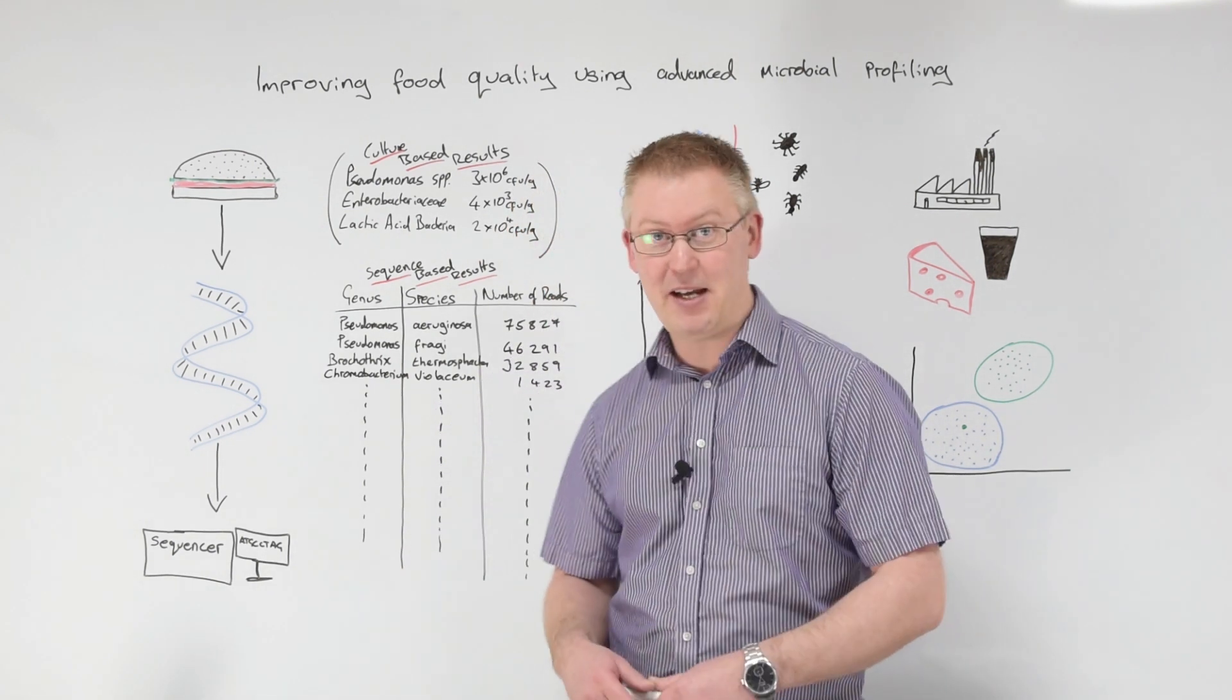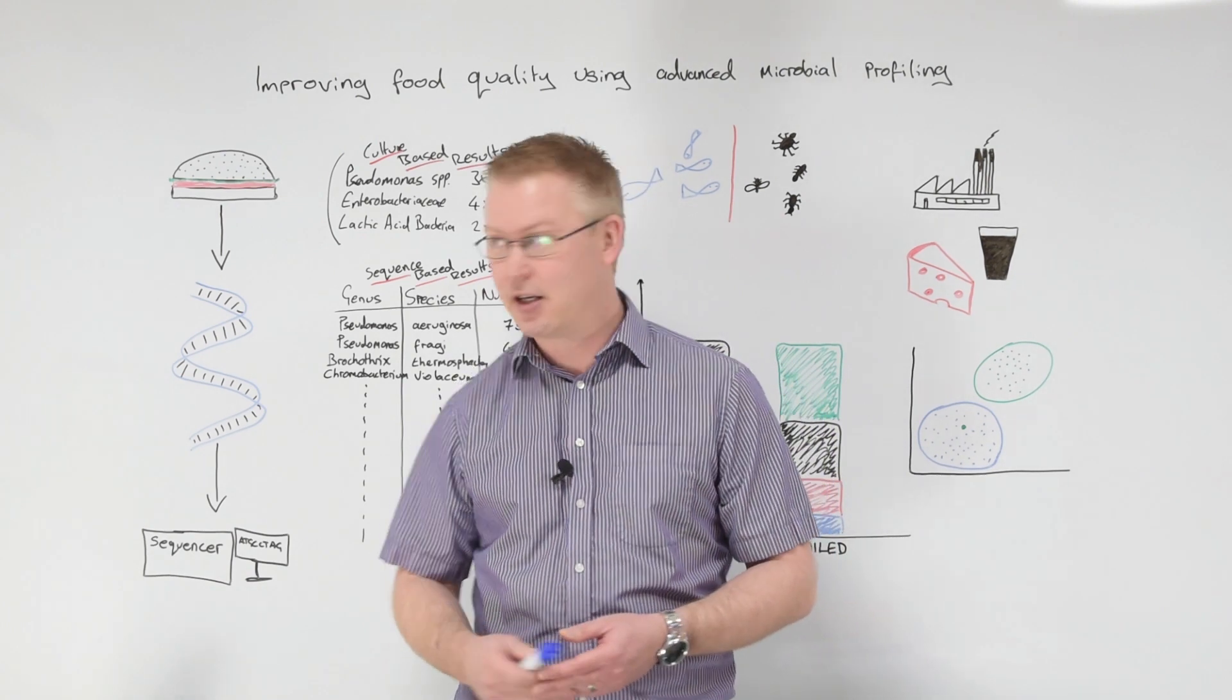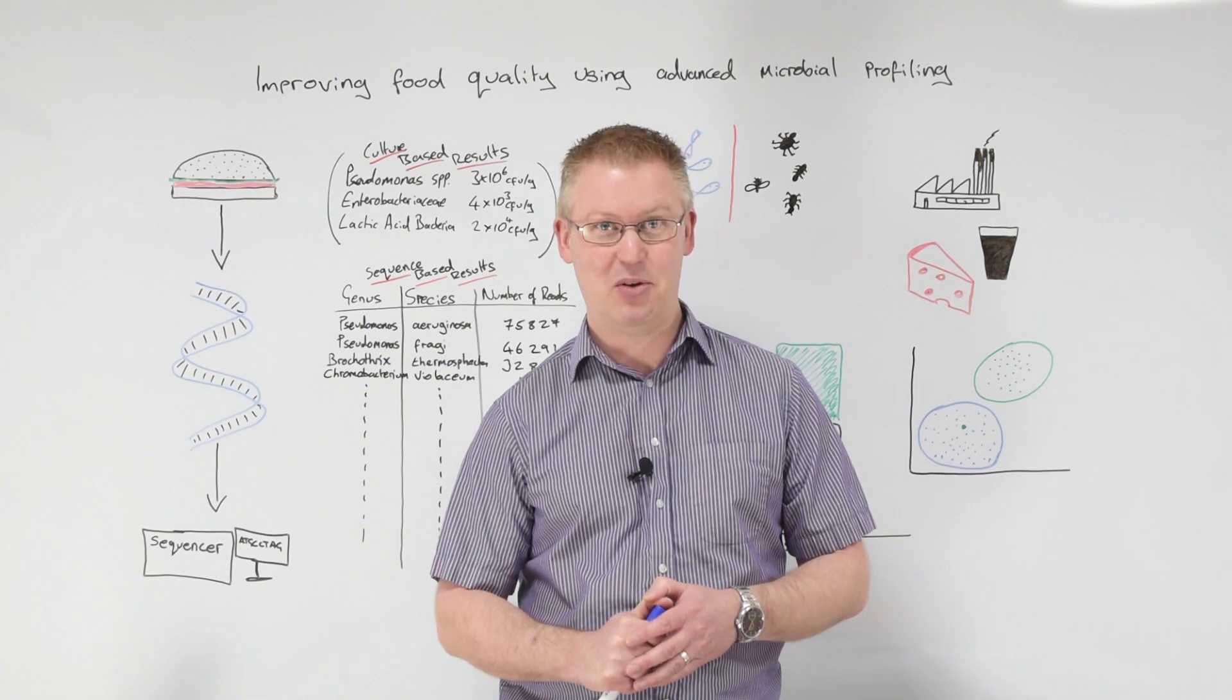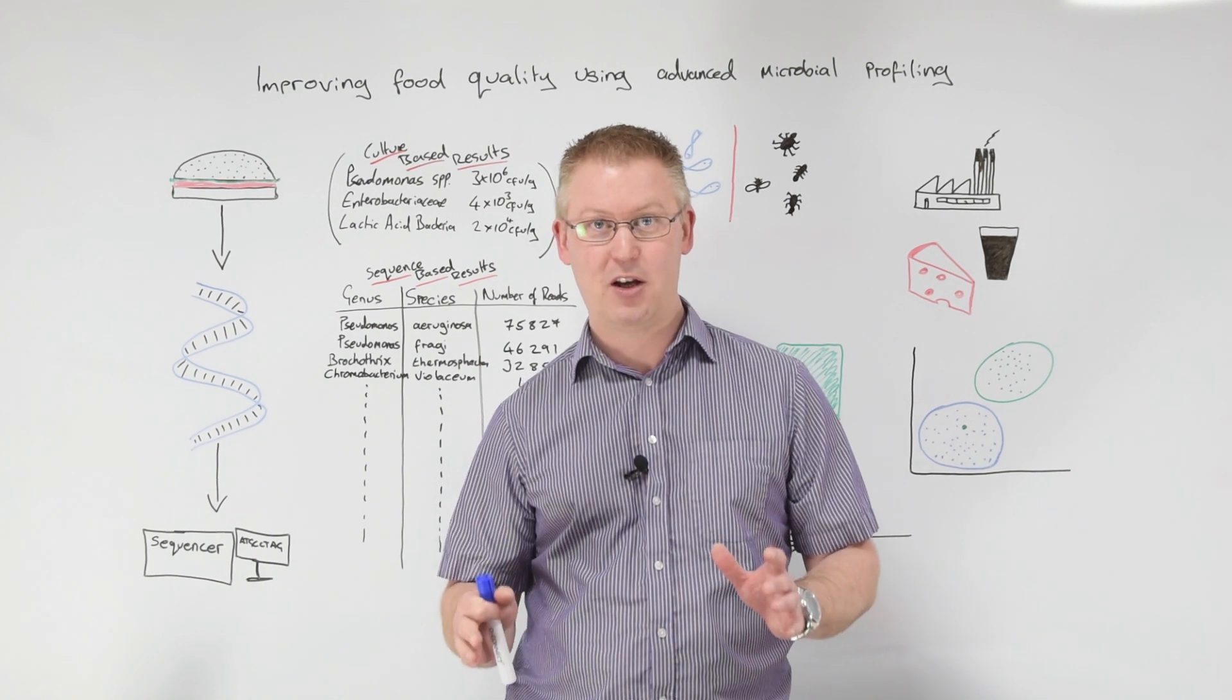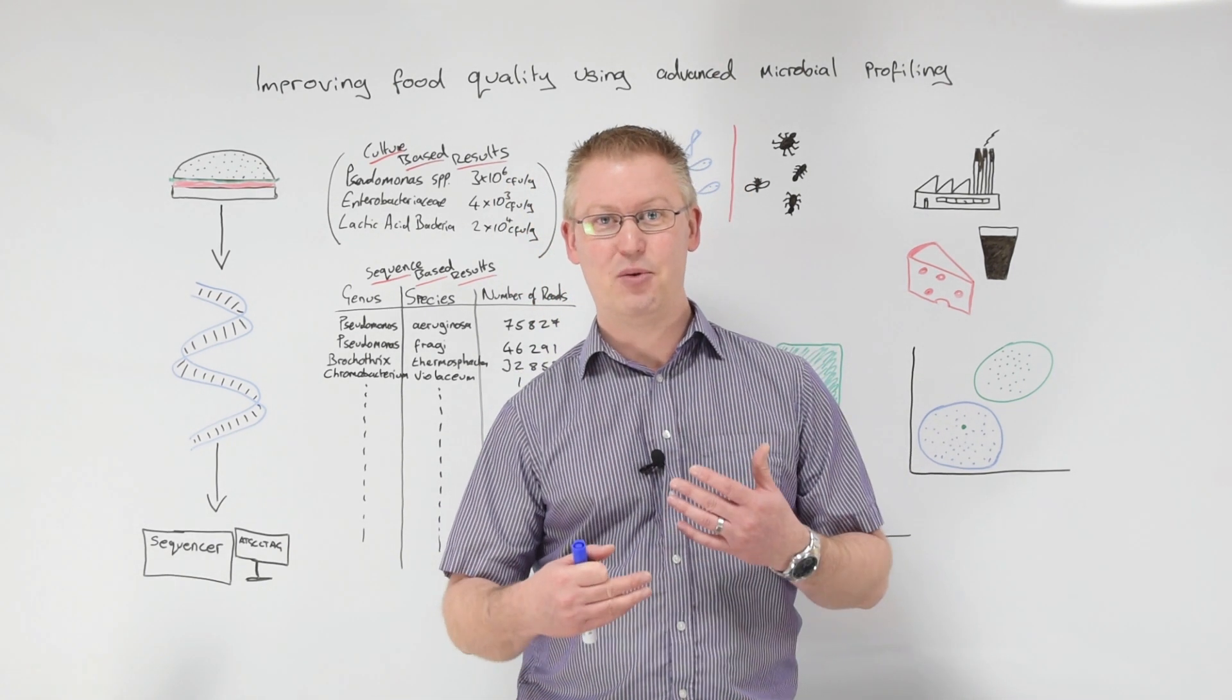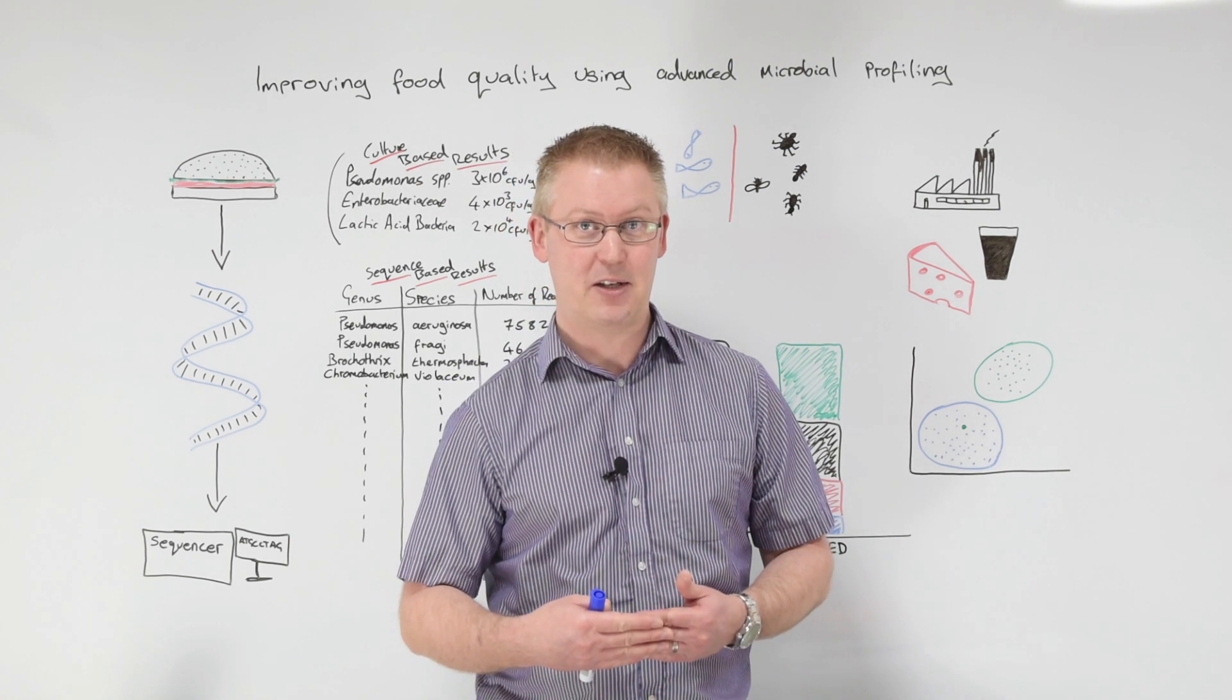And I've just got a little schematic here of how it works. So essentially what we do is we take our food product and we then extract microbial DNA. Once we have extracted that DNA, we can amplify a marker gene within it. And once we have that gene amplified, we can put all those sequences onto a sequencer. And once we've sequenced all those different sequences, we can use some software to compare those sequences against the database of known sequences. And what we essentially get is a list of names and numbers that comes out.